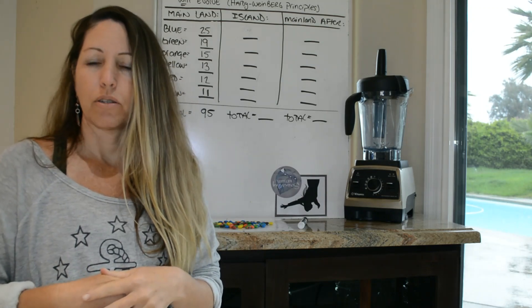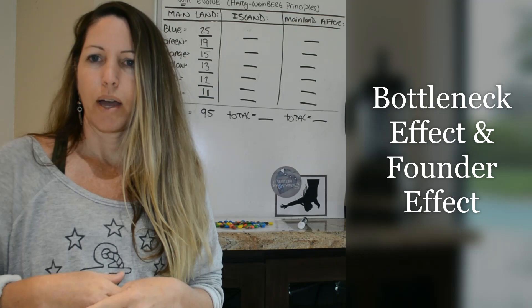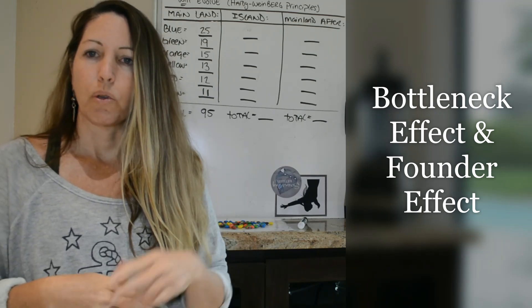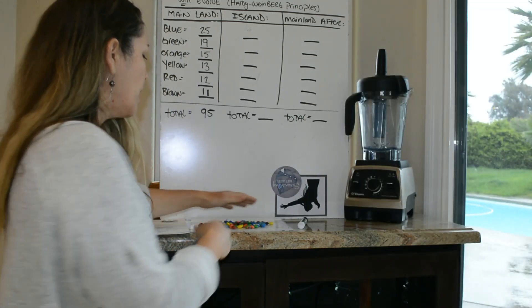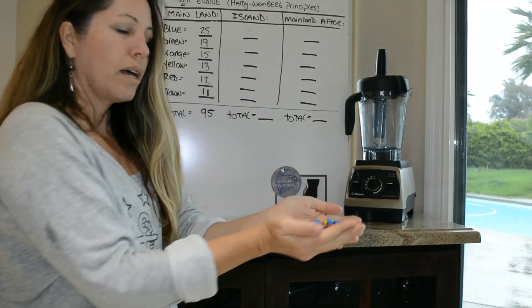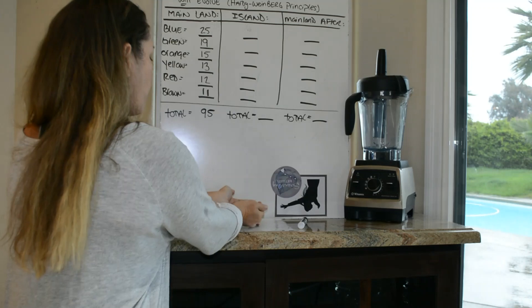And this also includes human impact, and so this can lead us into what's known as the founder effect and the bottleneck effect, which will actually be in your corresponding lecture with this. Now what I did is I took a bag of M&Ms and I just simply isolated them out according to what their colors are.